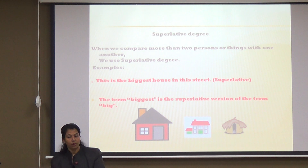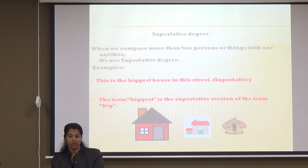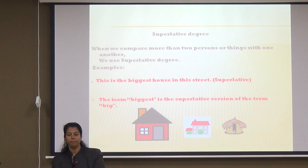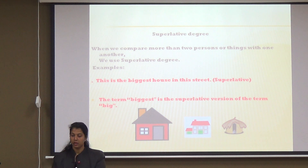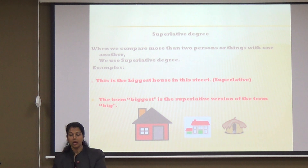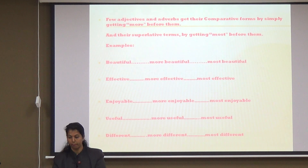Superlative degree. When we compare more than two persons or things with one another, we use superlative degree. Let's take an example: this is the biggest house in the street. You can see three different houses, and the third one is the biggest house. That is the superlative degree. The term 'biggest' is the superlative version of the term 'big'.